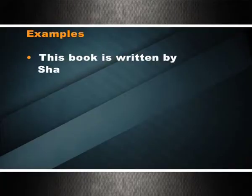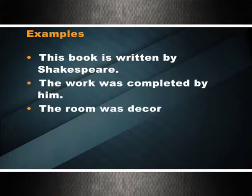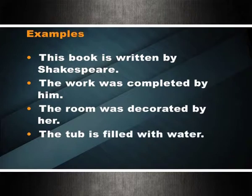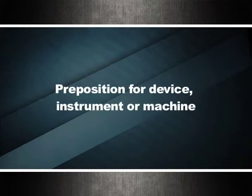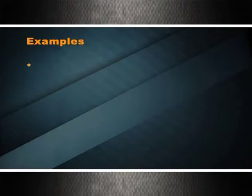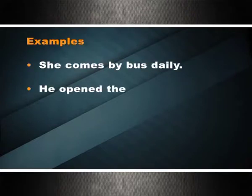Prepositions for agent are used for a thing which is the cause of another thing in the sentence. Such prepositions include 'by' and 'with.' Examples: this book is written by Shakespeare; the work was completed by him; the room was decorated by her; the tub is filled with water. Prepositions for device, instrument, or machine — such as 'by,' 'with,' 'on' — indicate how something is done. Examples: she comes by bus; he opened the lock with the key.